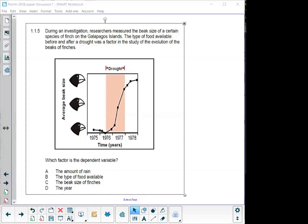A dependent variable is the variable that you are measuring or you are observing. The independent variable is the variable that you are choosing to look at or controlling. So, the independent variable in this case would have been my years, my time, or when the drought was, before the drought, after the drought. So, it normally lies on your x-axis. Your dependent variable, the one that you choose to take a look at, is average beak size in this case, and it's normally on the y-axis. So, the dependent variable is the beak size of the finches, C.